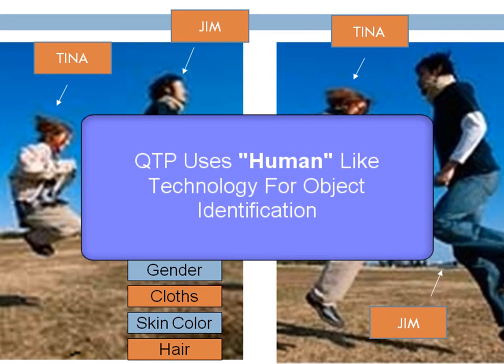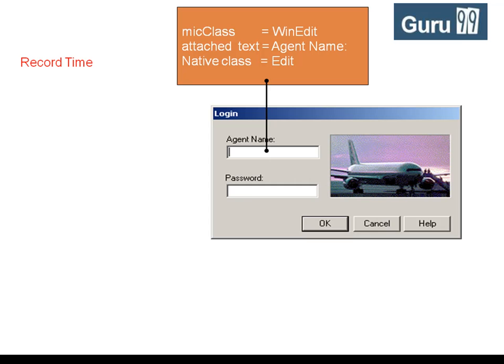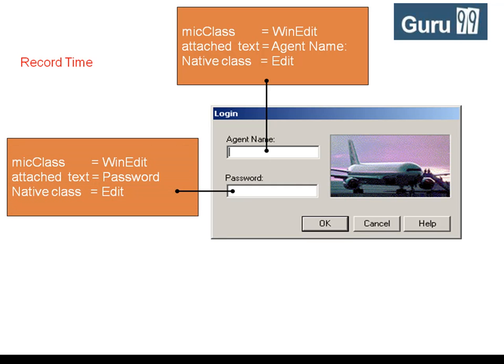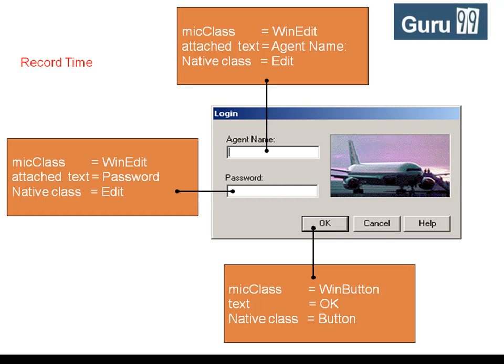QTP also uses a human-like technology for object identification. During record time, QTP tries to learn properties for a GUI object on which an operation is performed. In our example, it will record properties for agent name, password, OK button, and the rest of the GUI objects on which operations were performed.